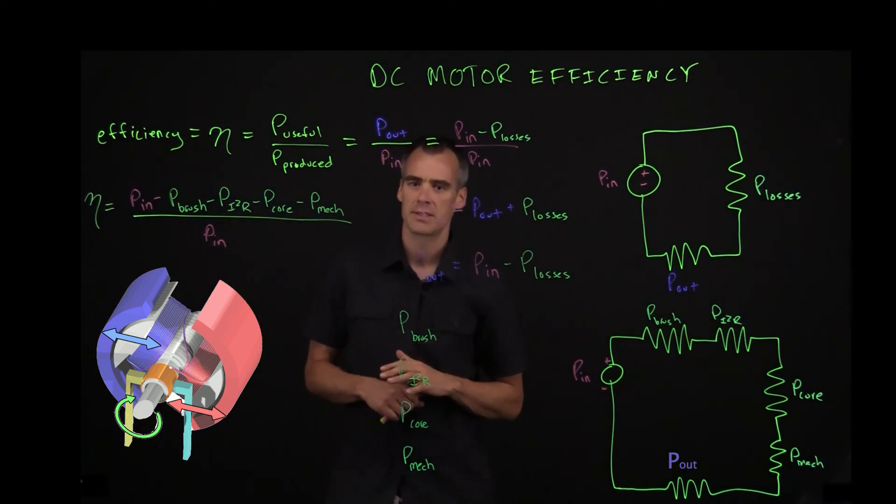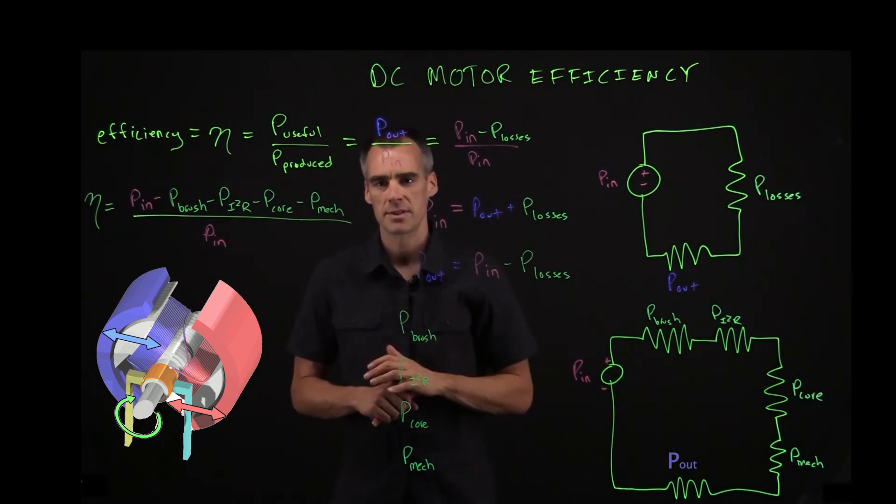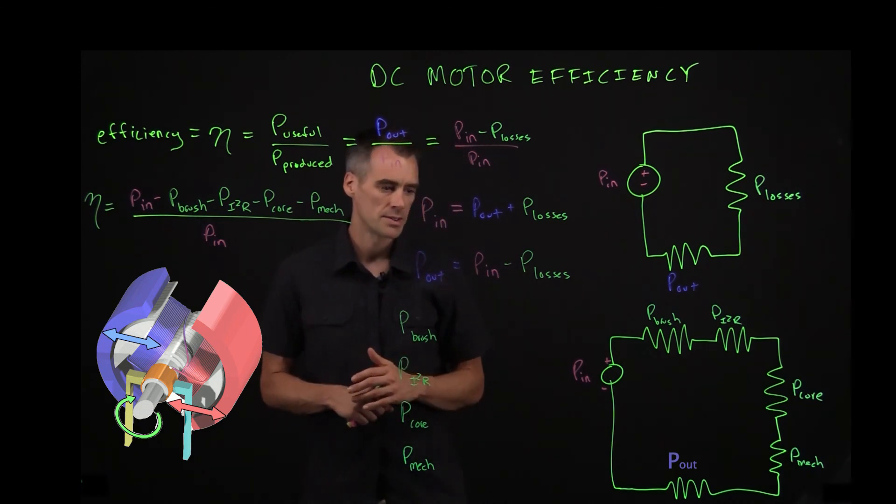Typically a DC motor has an efficiency on the order of maybe 70 to 85%, which is pretty good considering all these sources of loss.